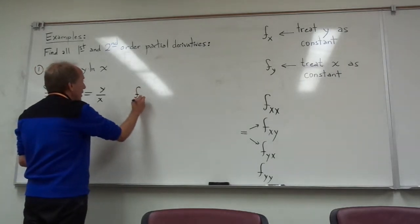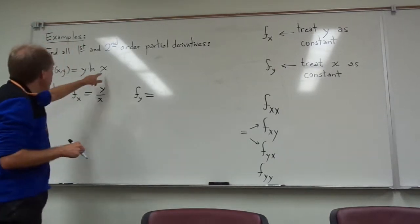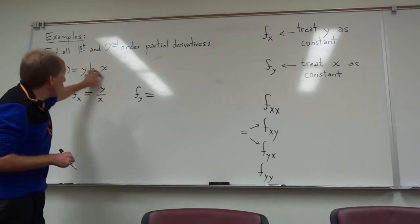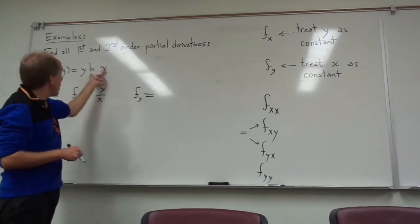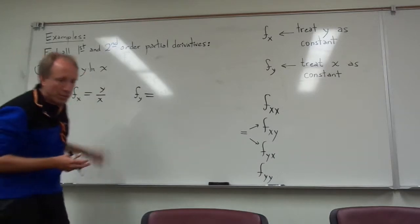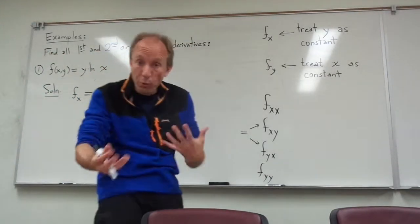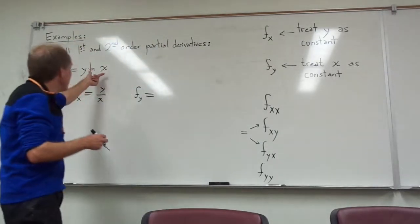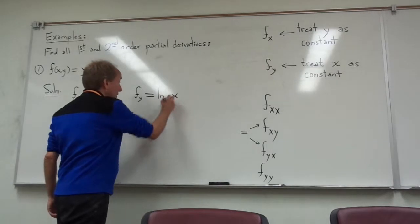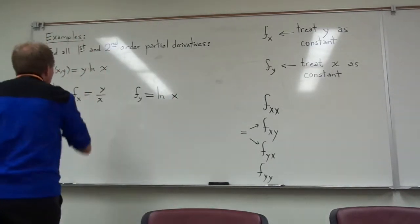On the other hand, if I want to differentiate this function with respect to y, I'm treating the x as a constant. So the whole ln(x) is just a constant being multiplied by y. If I was going to take the derivative of 4y, I would get 4. So if I'm going to take the derivative of ln(x) times y, I'm just going to get ln(x). Those are the first order partials.